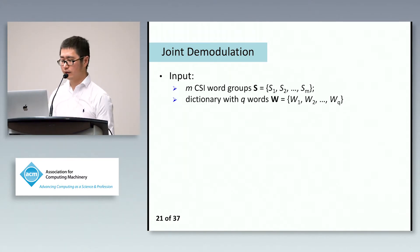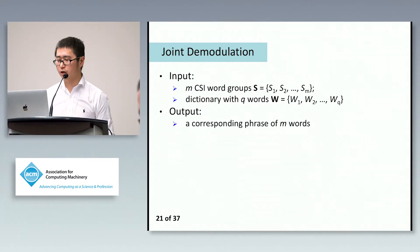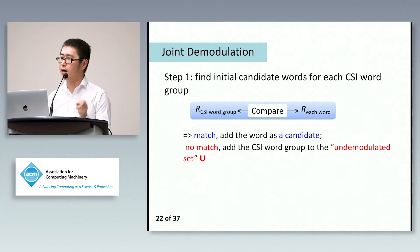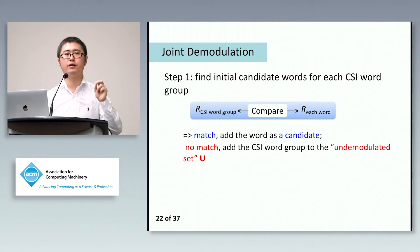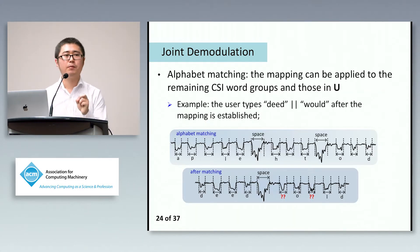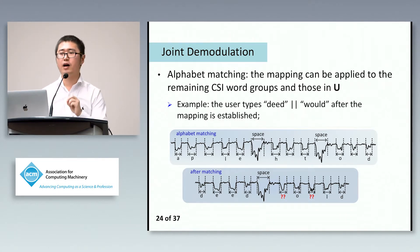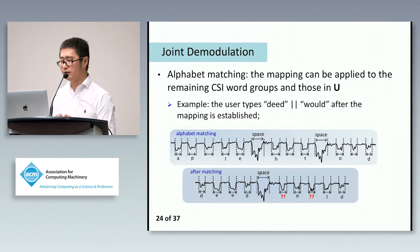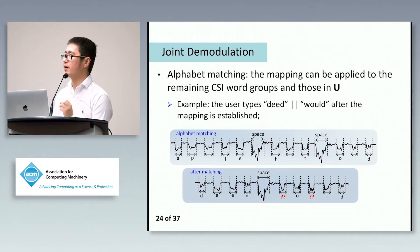Due to time limitations I won't describe the detailed joint demodulation, but I want to emphasize that if a CSI word group cannot be demodulated in the first phase, it will be added into an undemodulated set and wait until alphabet matching. Alphabet matching means the mapping between a CSI sample and an English letter is established. This mapping can then apply to other CSI word groups as well as those in the undemodulated set. With alphabet matching, we can directly demodulate the English words 'deed' and 'OLD' — three letters in the second typed word.